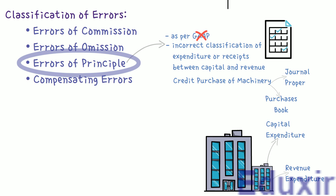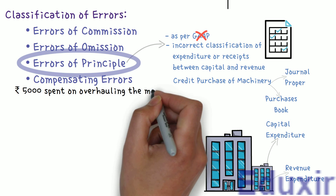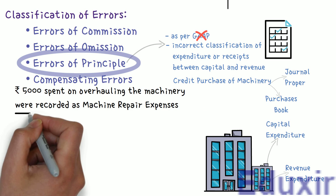If the purchase of machinery is recorded in the purchase book, it is an error of principle, because the amount spent on the machine is capital expenditure, while the amount spent on goods is revenue expenditure — so capital expenditure is incorrectly classified as revenue expenditure. Another example is when rent paid to the landlord is recorded as payment to the landlord, instead of the rent account, since rent is an expense. Consider also the case wherein Rs. 5,000 spent on overhauling machinery was recorded as machine repair expenses — in this case, the machine repair account is debited with Rs. 5,000.